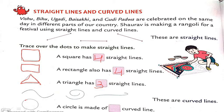Which shape is this? Yes, this is a circle. A circle is made of how many curved lines? A circle is made up of one curved line. You all are my good students — you remember that. Very good. So to summarize: a square has four straight lines, a rectangle also has four straight lines, a triangle has three straight lines, and a circle is made up of one curved line.